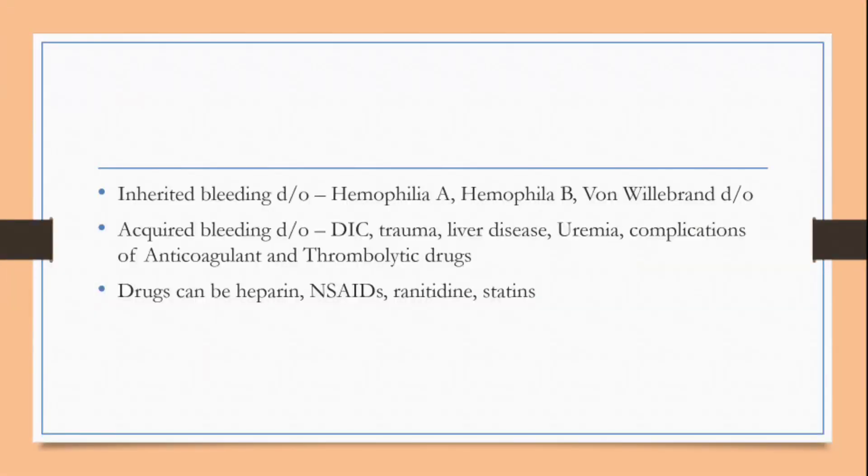There are many bleeding disorders — inherited or acquired. Inherited bleeding disorders include Haemophilia A (deficiency of factor 8), Haemophilia B (deficiency of factor 9, known as Christmas disease), and Von Willebrand's disease. Von Willebrand factor helps in adhesion of platelets and factor 8; deficiency causes disorders in clotting.